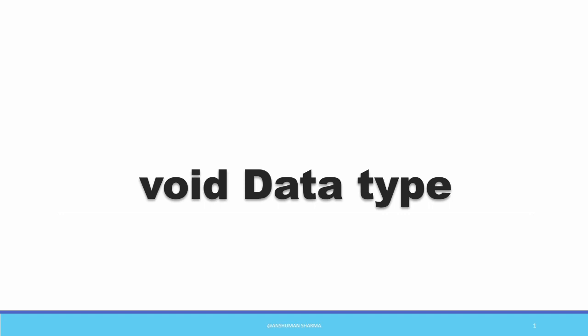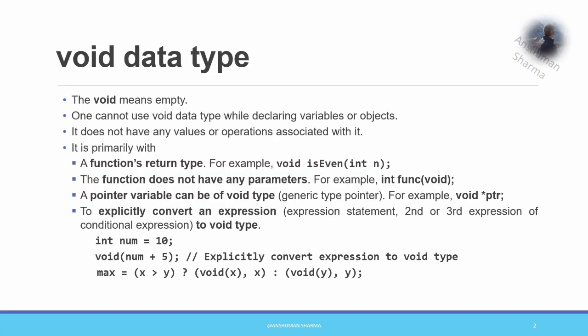In this video we'll be discussing the void data type, another data type available in C++. Void basically means empty, so this data type is not used for declaring variables or objects, and it does not have any value or operations associated with it.